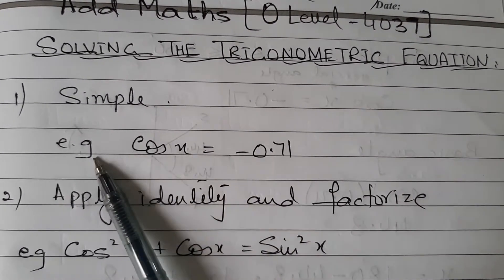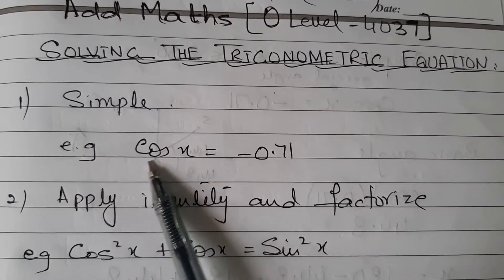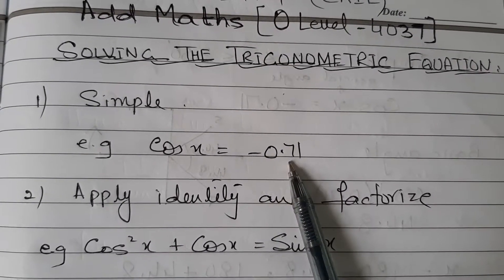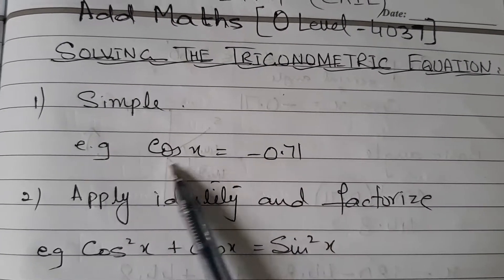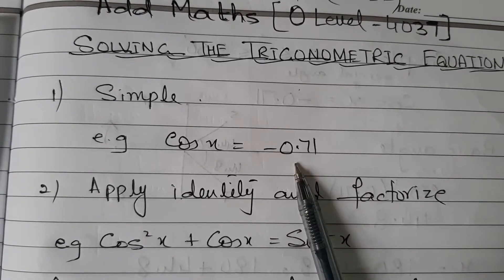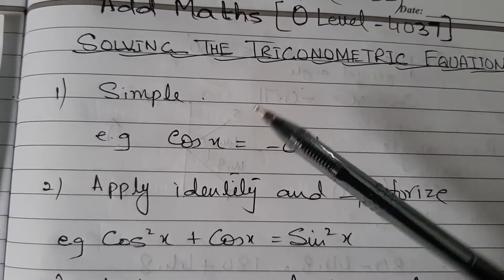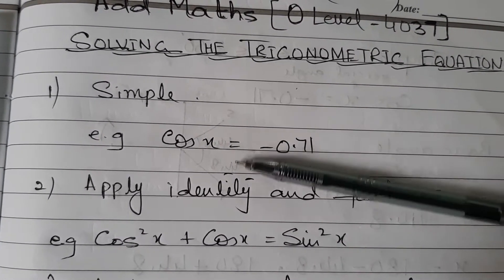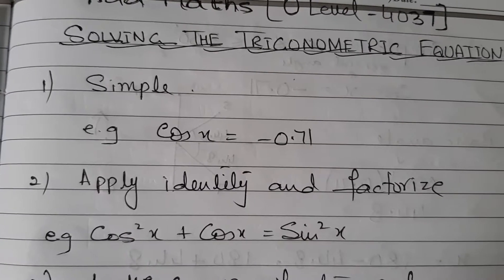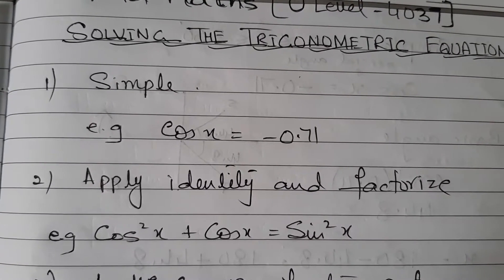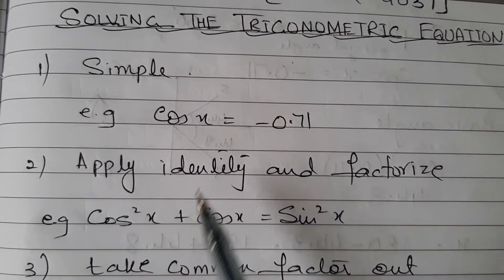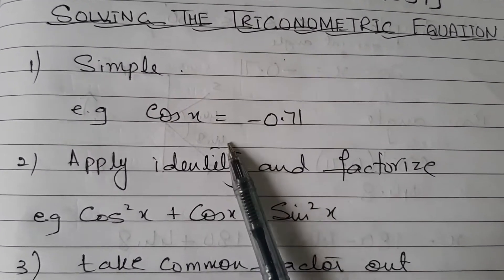So number one are these: for example, cos x equals to a ratio written here, or sin x or tan x. So this is a simple type. First I am talking about the types, and then I will go into the explanation of how to solve each one.